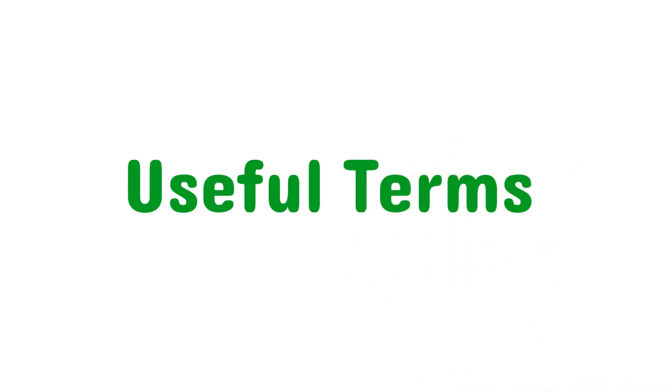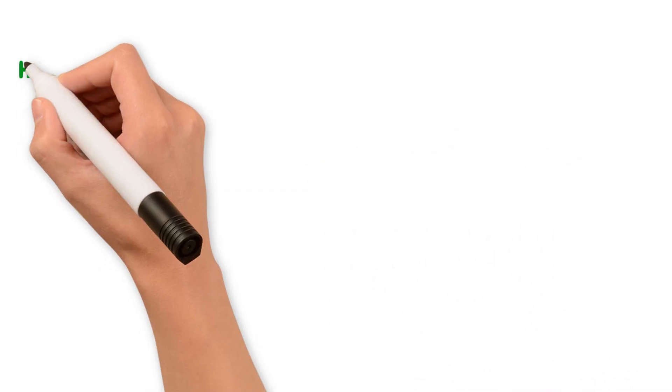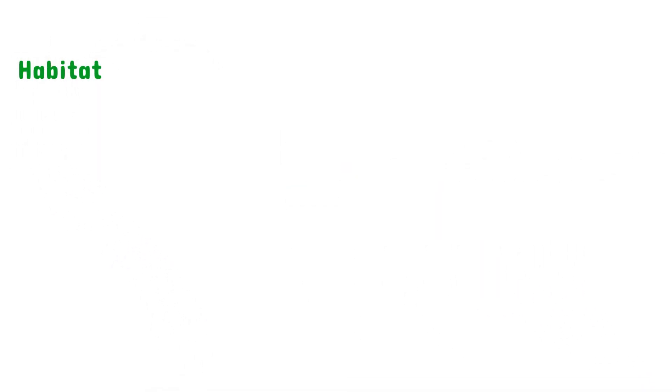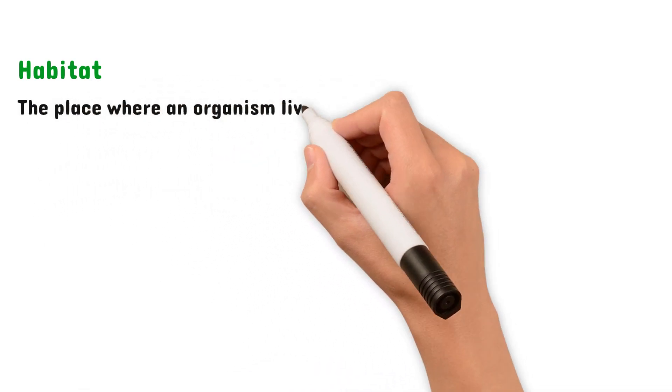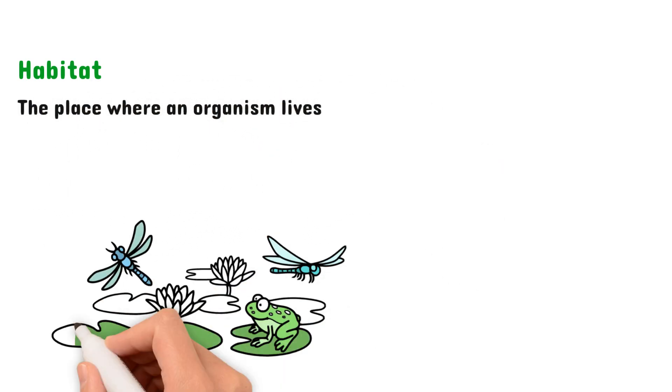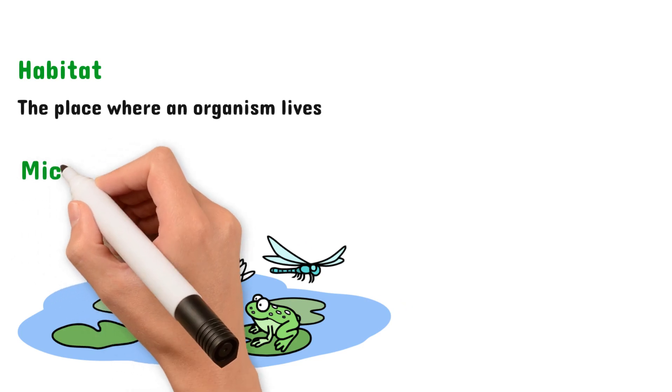The first term we have to know is habitat. This is defined as the place where an organism lives. So for example, you can see we have this frog and he clearly lives in a lake, so the lake is the habitat.